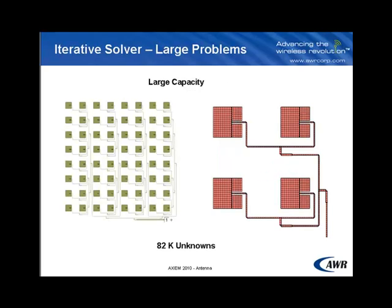The second thing I'm going to show you today is Axiom's ability to solve large problems. This antenna array that you're seeing right here is 82,000 unknowns and would be virtually impossible to solve with a direct solver.